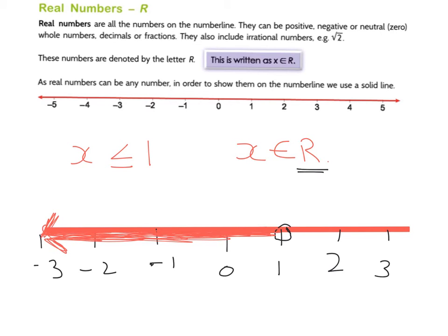So if it gets really close to a number but it doesn't hit the number, it is an empty circle. Well, you can see here, this one says X is less than or equal to 1. So if it's less than or equal to 1, it means it can be 1, which means we fill in our circle.